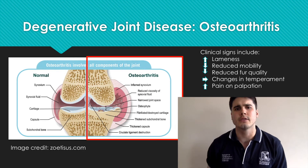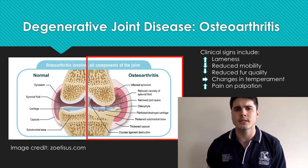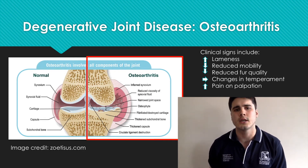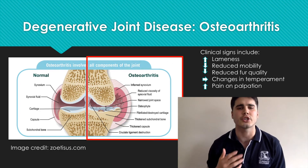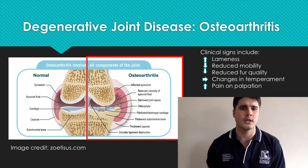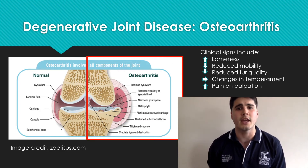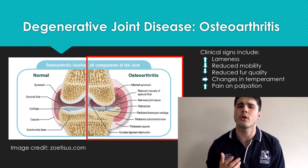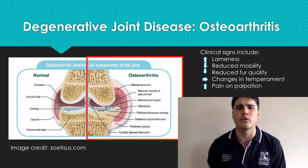Clinical signs of osteoarthritis in cats can involve lameness, reduced mobility and activity, reduced fur quality due to the reduction in grooming, changes in temperament involving aggression, and pain on palpation of the joint. Osteoarthritis is common in older cats and often poorly diagnosed.